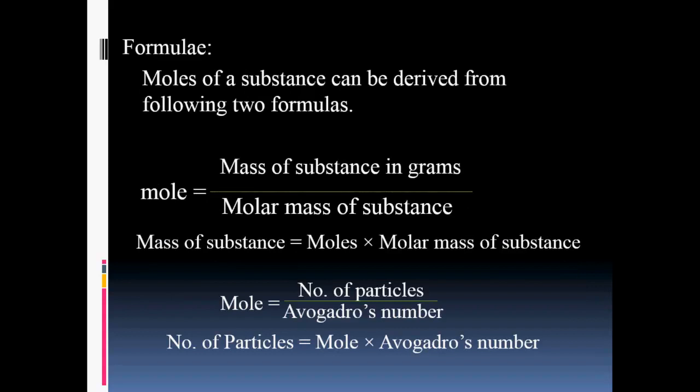Come toward the formula. Moles of a substance can be derived from the following two formulas. The first one: mole is equal to mass of a substance in grams divided by molar mass of a substance. From this formula, mass of a substance can also be calculated as mass of a substance is equal to moles multiplied by molar mass of a substance.